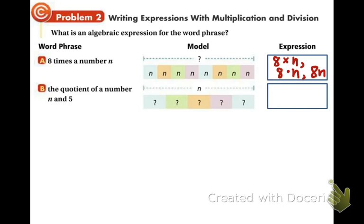In part B, we have the quotient of a number N and 5. What does quotient mean? Quotient means division. So we're dividing N into 5 equal parts. So another way is to write it in fraction form N over 5. So there's a couple different forms. Okay, example 2 is done.